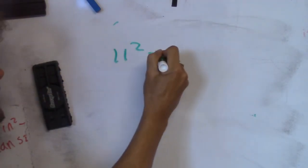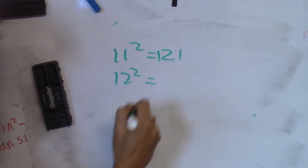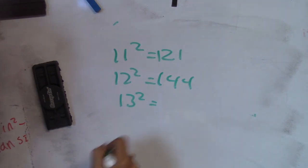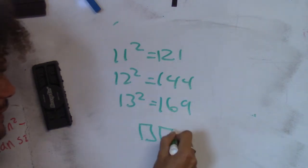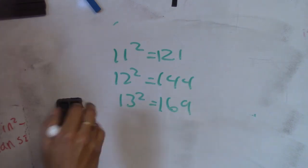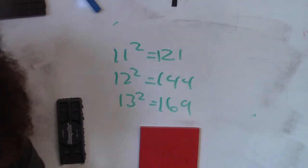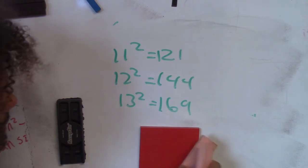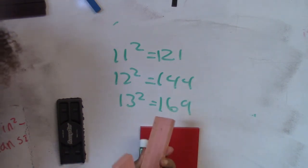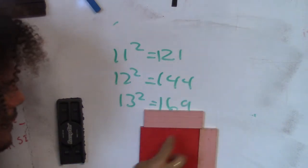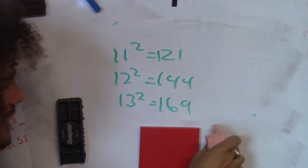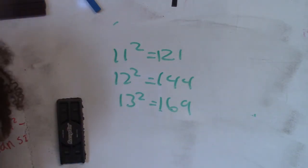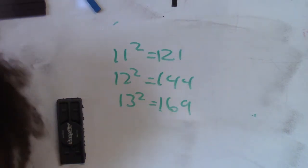Let us continue. 11 squared — 121. 12 squared — 124? No — 144. 13 squared? 169. 169. I hope you can see these. And this is why I tell people to get — hold on, let's just pause for a second on this one. Boom boom boom — bam! Alakazam — bam! I hope this has got a magnet on it. Bam bam bam — 169. Don't even have to do any adding. It's non-dynamic, as they say.